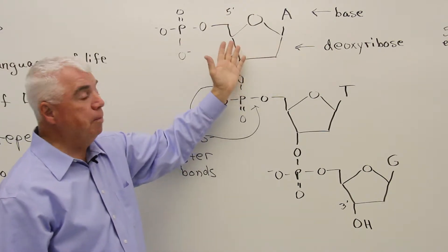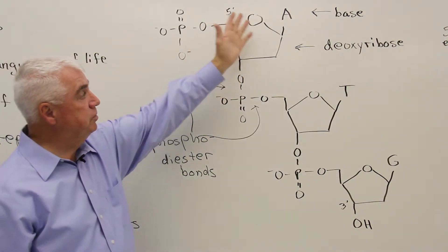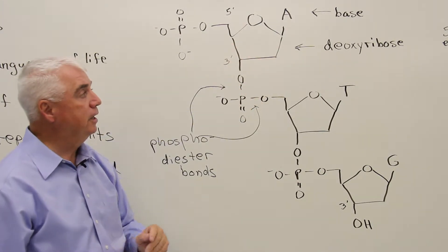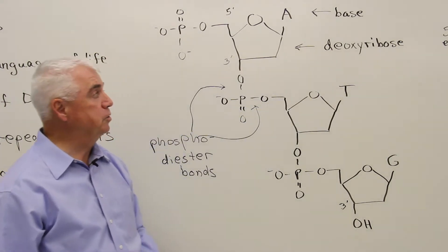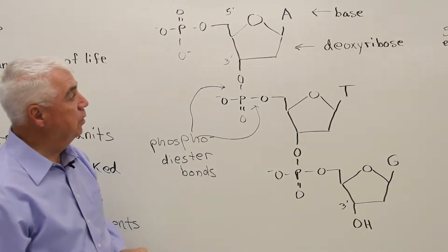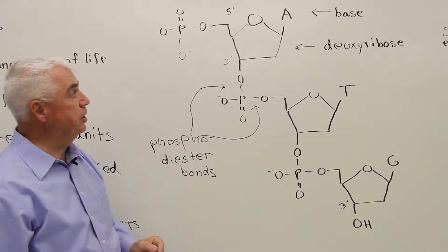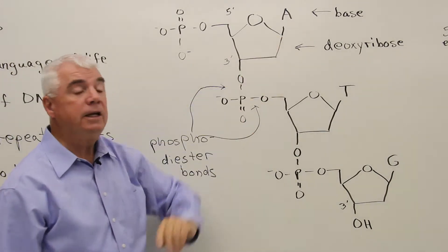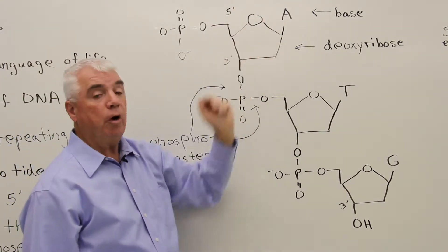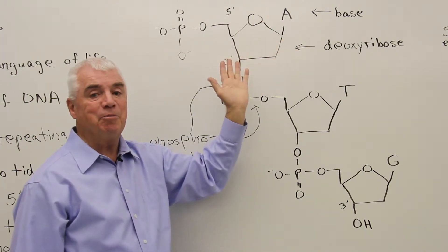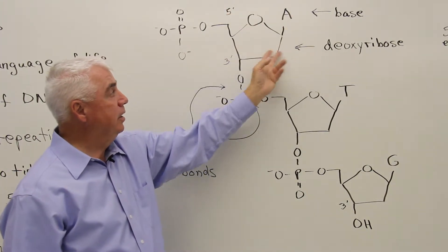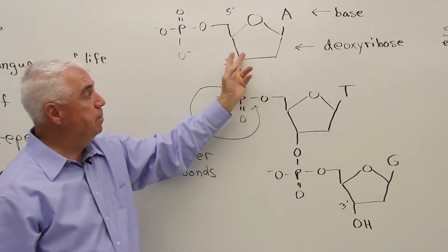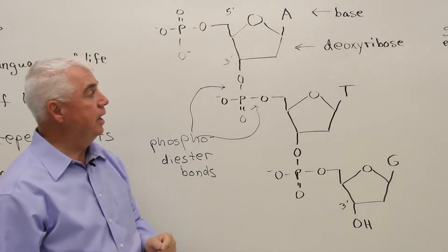Here's the sugar part of the molecule. This is similar to ribose, except there's no oxygen at this position, and so it's called deoxyribose. Deoxy means without an oxygen at that position. The base is attached here at the ring at position one, and it too would have a numbering system around the ring.